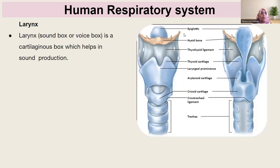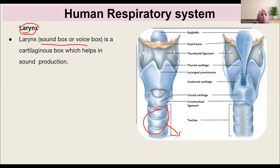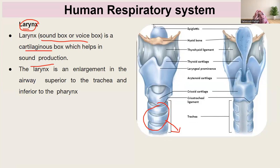After the pharynx, which is the food passage through which food enters into the esophagus, you have the larynx. The larynx starts a little below the pharynx and extends into the trachea, which then enters into the bronchus and then the lungs. The larynx is basically the place where sound or voice is produced, made up of cartilage tissue. It is above the trachea and below the pharynx.